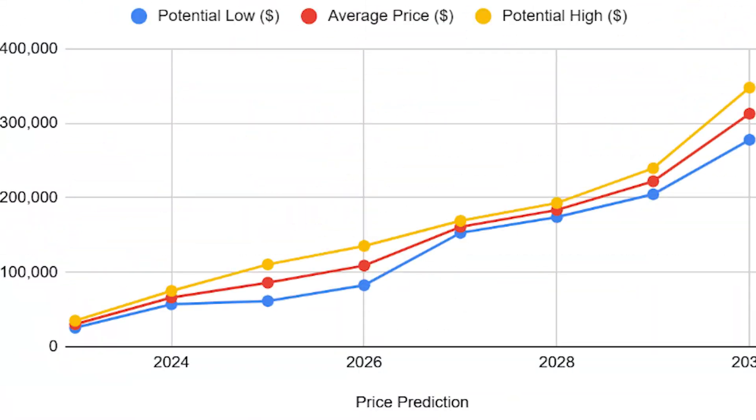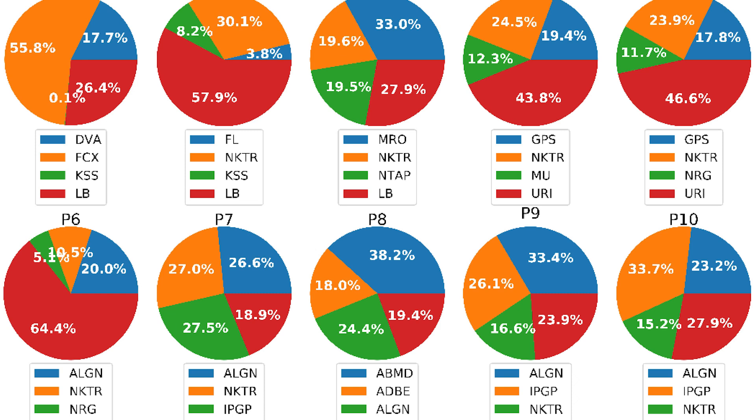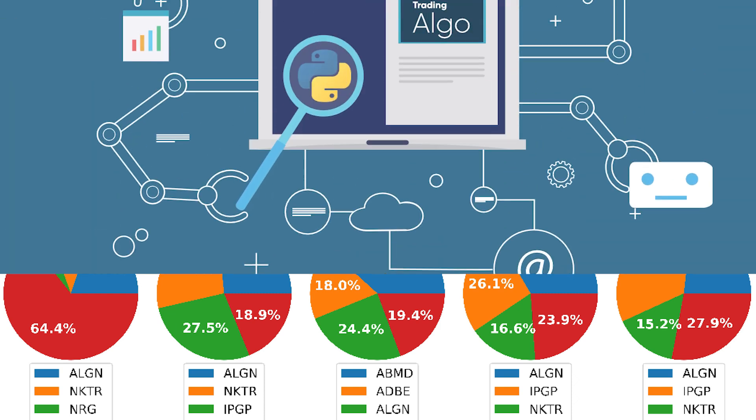In the context of quant trading, machine learning is used to identify patterns, predict future price movements, optimize portfolios, and automate trading strategies. These machine learning models adapt and improve as they are exposed to more data over time.